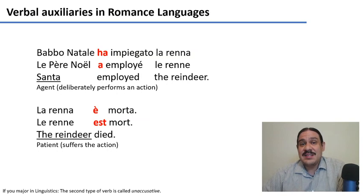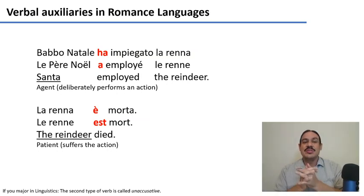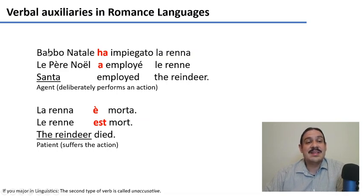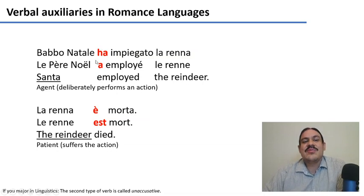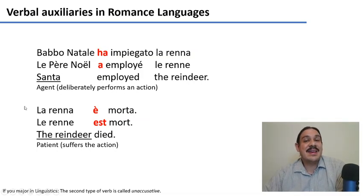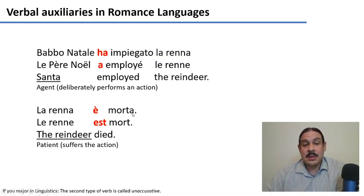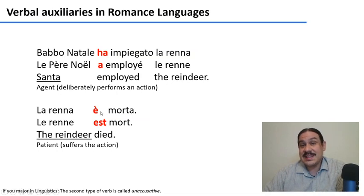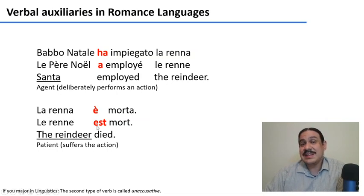If you're studying a language like French or Italian, you'll know that this distinction makes a difference in how you structure your language. For sentences performed by an agent, like Santa employed the reindeer, French and Italian require the auxiliary avoir or avere. On the other hand, when the patient is the subject — like in the reindeer died, le reine est mort, la reine est morte — your auxiliary changes to être or essere. So if your subject is doing the action, you use certain constructions; if your subject is suffering the action, you use a slightly different linguistic construction.